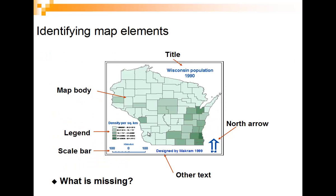These are the different elements of a map: a title, a map body, a legend, a scale bar, a north arrow to tell us what's north, and maybe some other text. Sometimes I put things like disclaimers and data sources — where did I get the data from? Maybe I put the title all the way up at the top in bigger letters, so that's the most important thing people focus on.